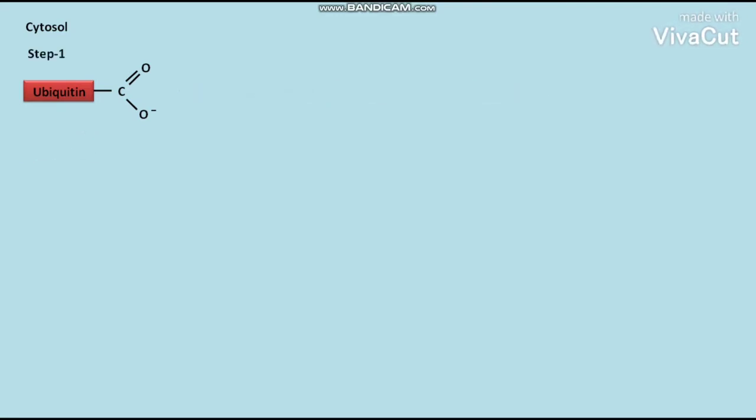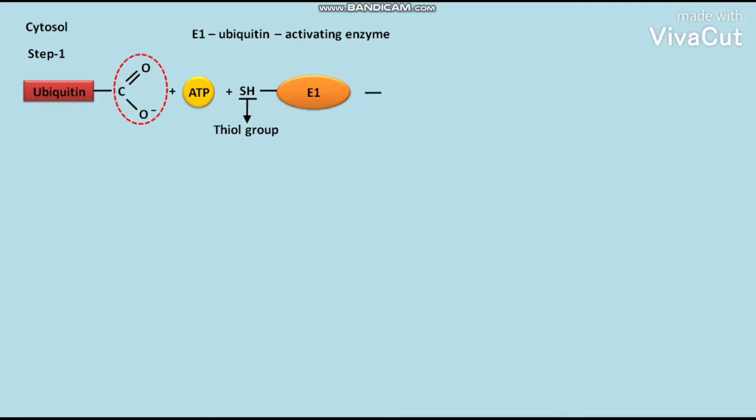In step one, a biochemical reaction occurs in which the reactants are ubiquitin and ATP. This reaction is catalyzed by E1, or ubiquitin activating enzyme. The SH group in E1 is called the thiol group. This thiol group reacts with the carboxyl group of ubiquitin to form an E1-ubiquitin complex.